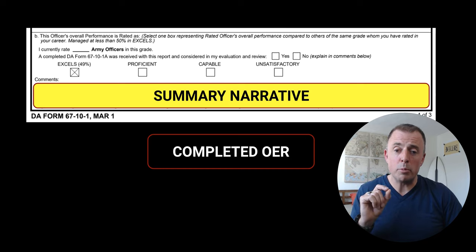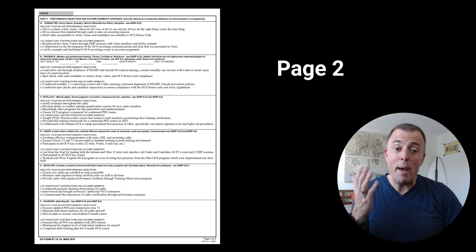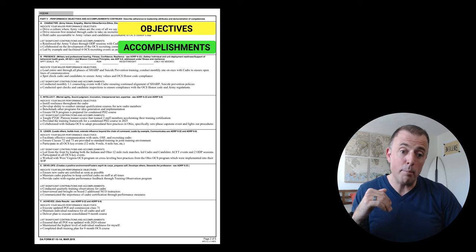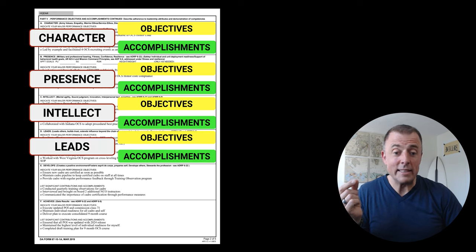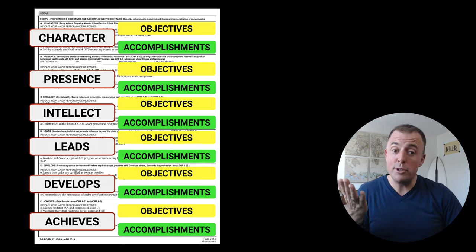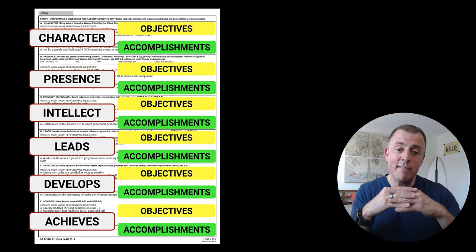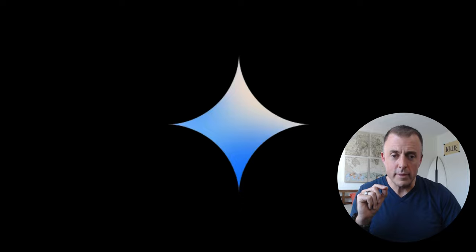This summary narrative is going to go on the front of the completed OER form. I spent all that time explaining the left and the right and the summary narrative because we're going to do that six more times. On the back of the form, the employee has filled out different sections: objectives and accomplishments for character, presence, intellect, leads, develops, and achieves. We want to take each one of those objectives and accomplishments and have AI smoosh those together and give us a draft narrative for each of these sections. We're going to go over it at the end and make it ours, but we're going to let AI make it easier for us.